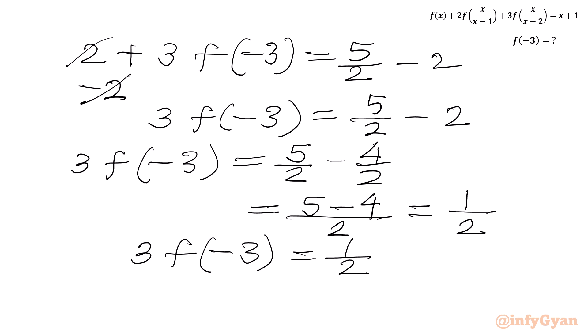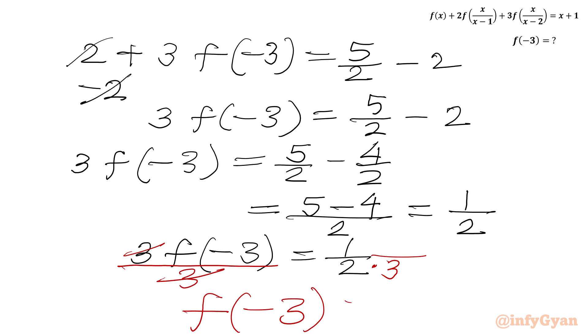Now divide both sides by 3: f(−3) = (1/2) / 3 = 1/6. So our final answer is f(−3) = 1/6.